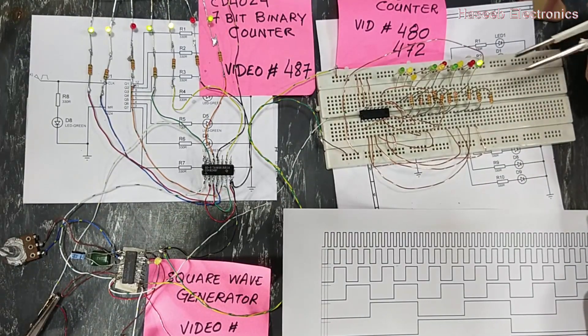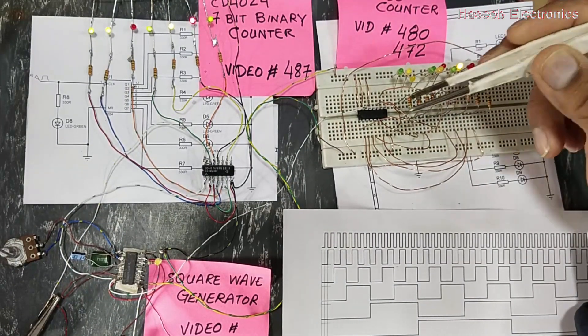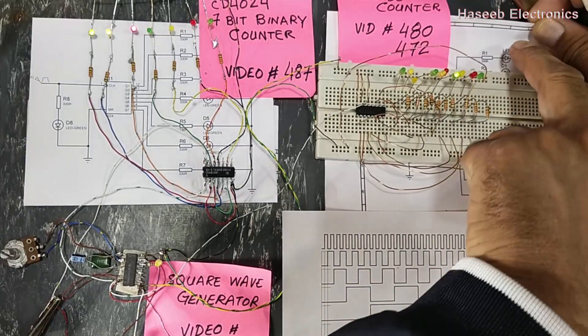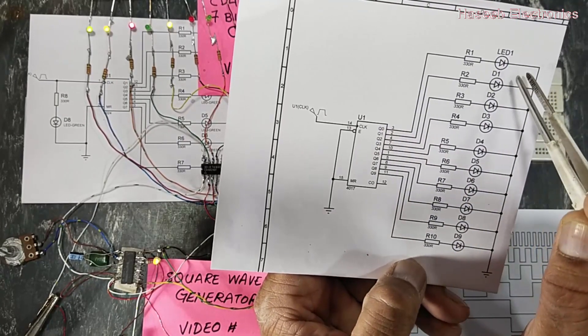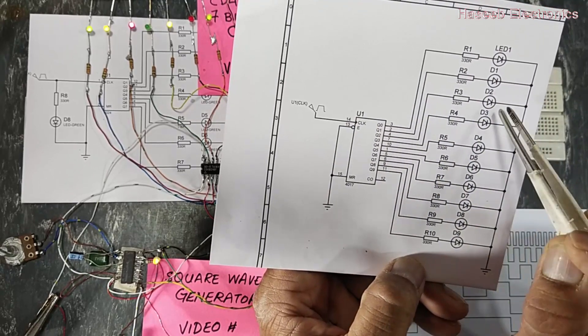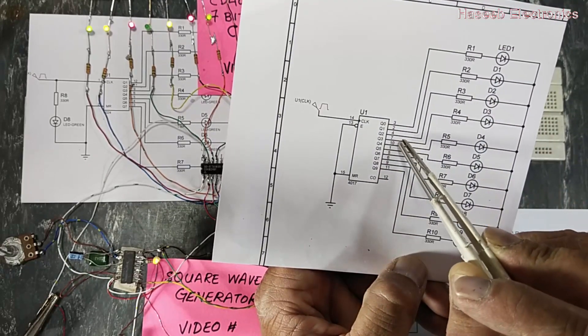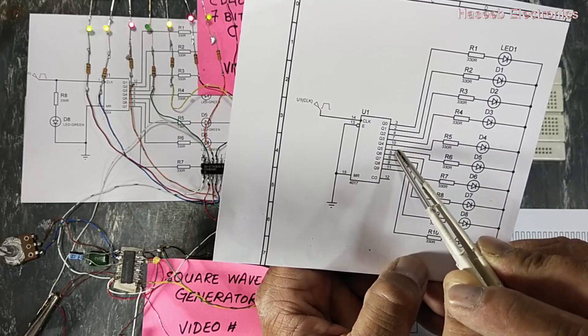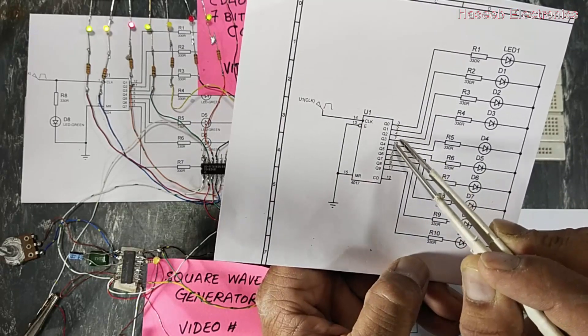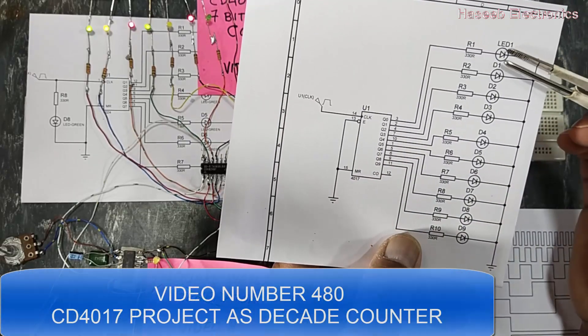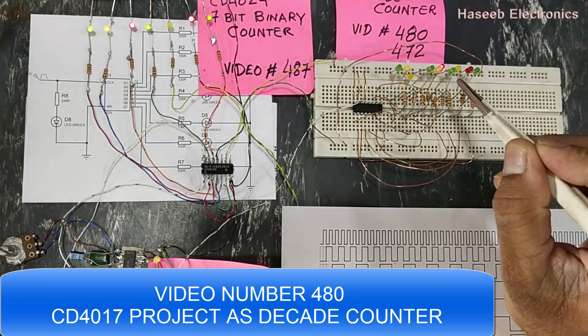We connected all the connections as mentioned in my last video. LED number one goes to pin number 3, two to pin 2, then pin 4, 7, 10, 1, 5, 6, 9, and 11. In this sequence it will work, and at each pulse the output will shuffle to the next register.